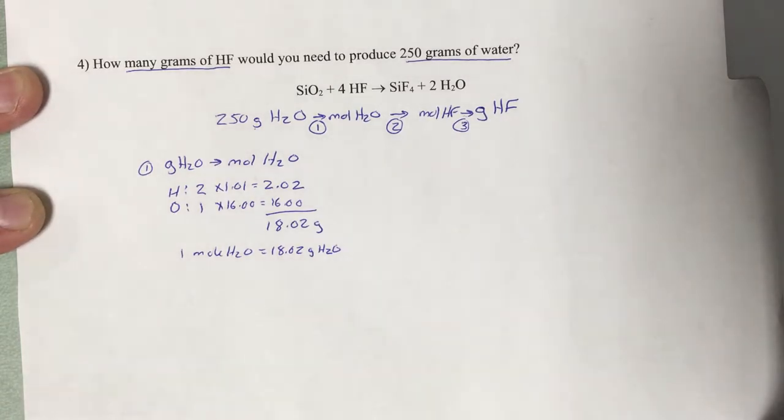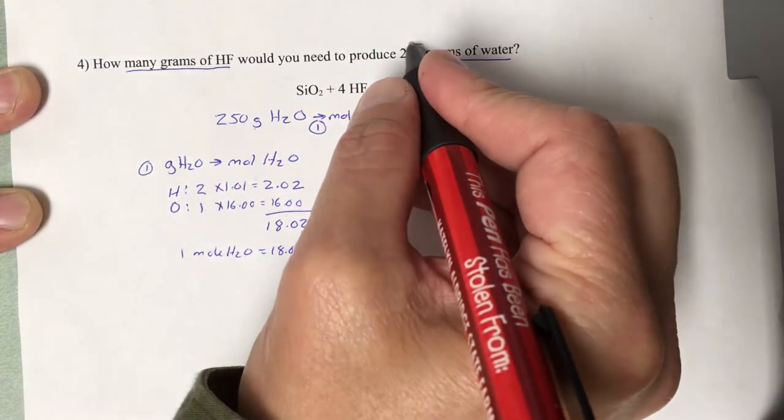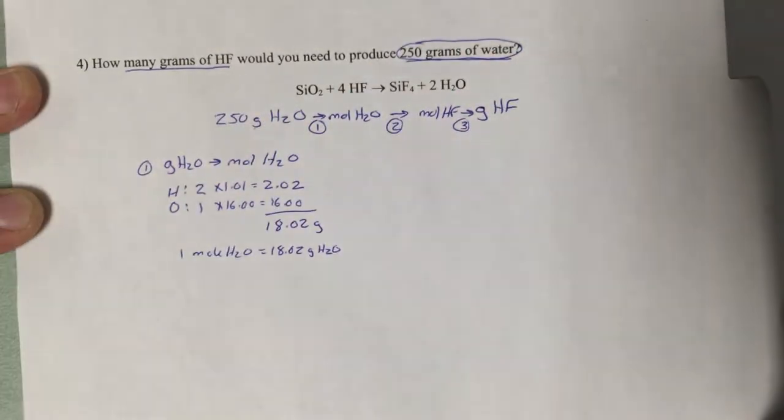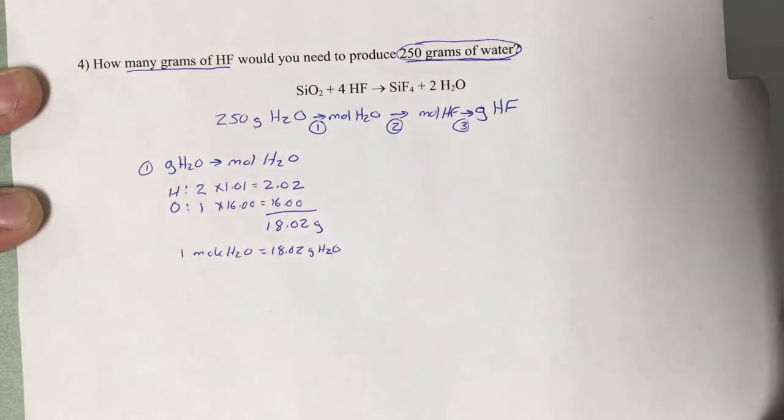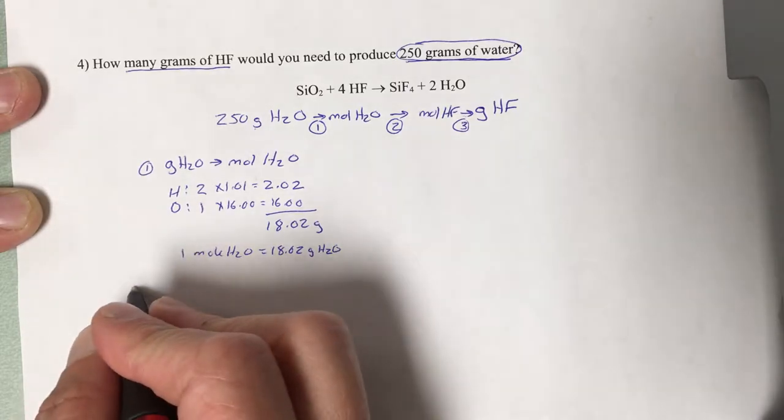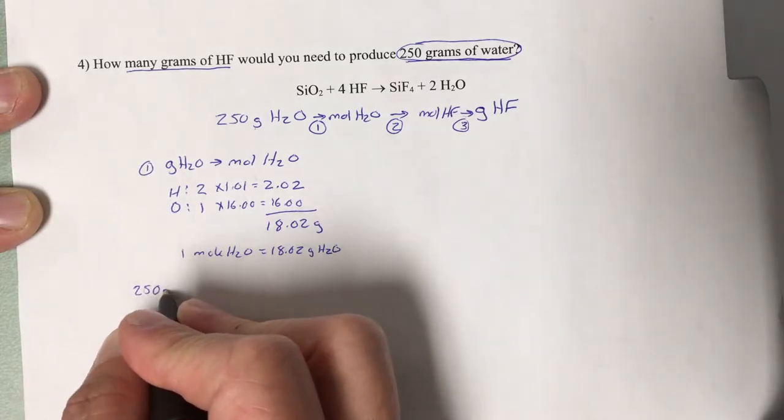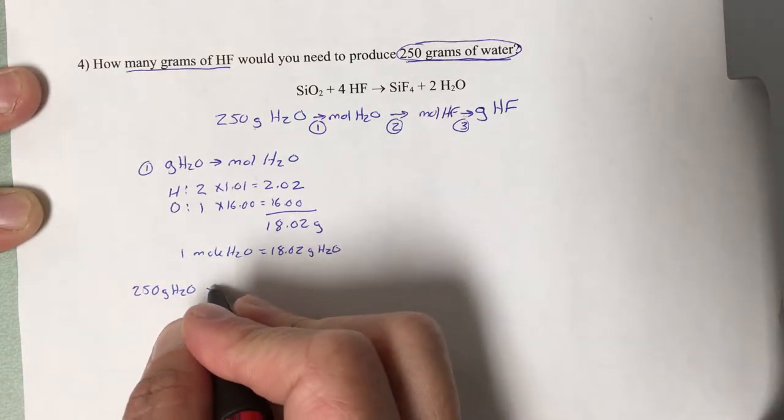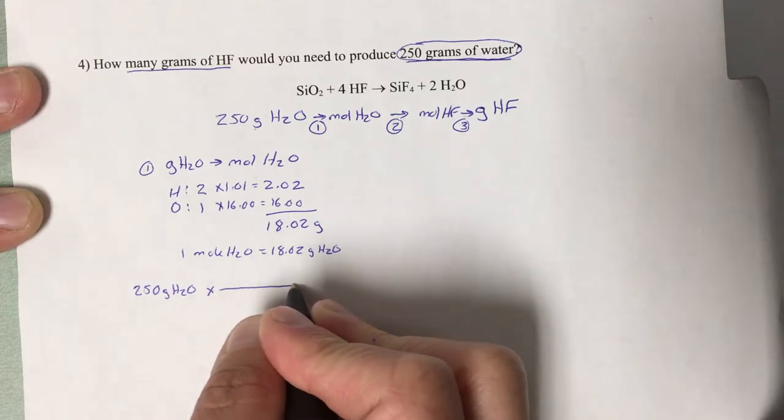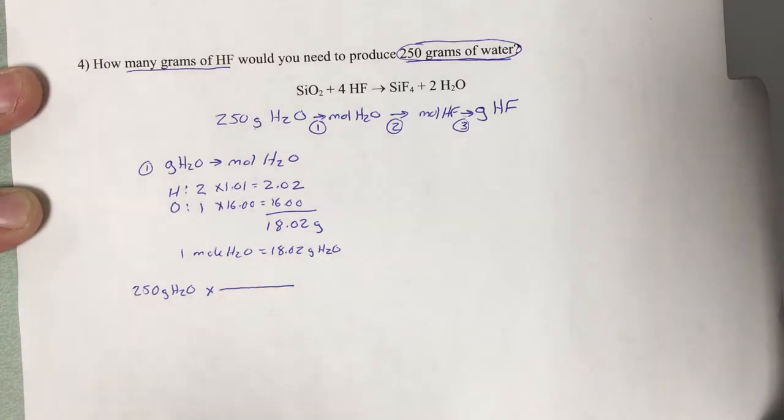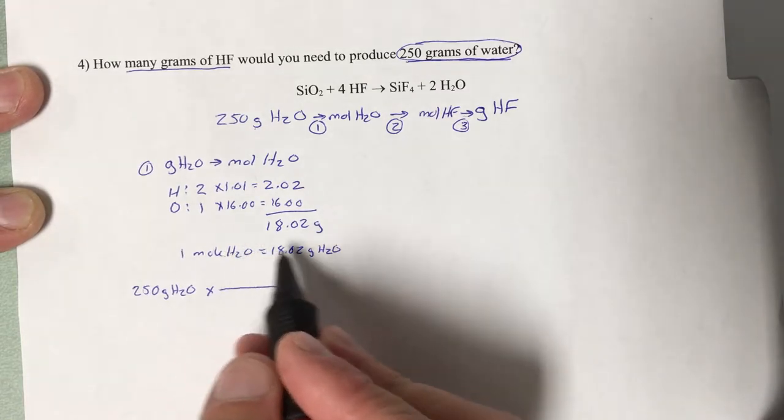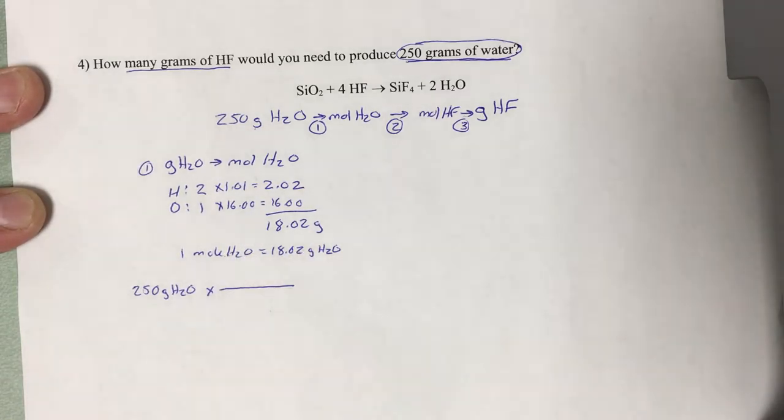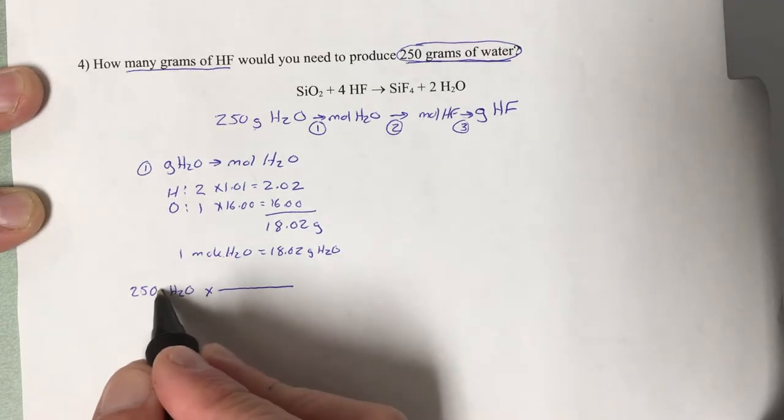So we can say one mole of water equals 18.02 grams of water. Now we can do our conversion. Always start with what we were given: 250 grams of water. Write that down first. All of these equations, all this math always starts with the given. Times, and then the conversion factor, that fraction that will cancel out the grams of water.